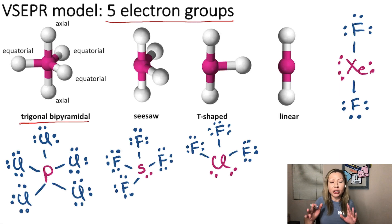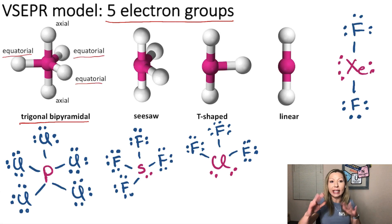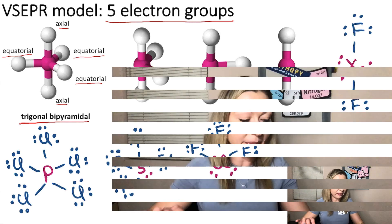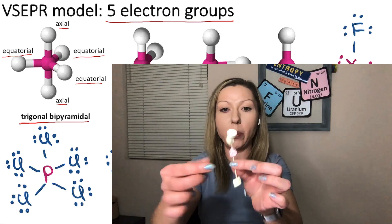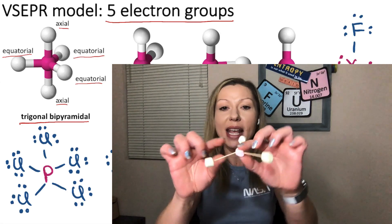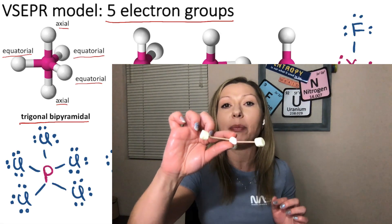It looks a little bit complicated, but it's actually pretty simple. We are going to have three atoms that are in the equatorial positions and they are in one plane, and two more atoms in the axial positions. The simplest way to imagine this is to take the trigonal planar geometry that we know really well. The bond angles are 120 degrees, and these are the atoms in the equatorial position in a trigonal bipyramidal shape.